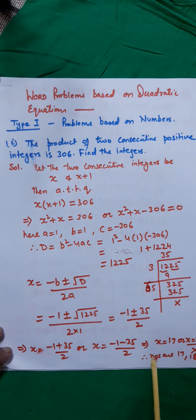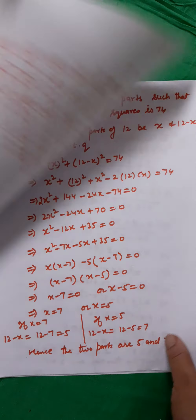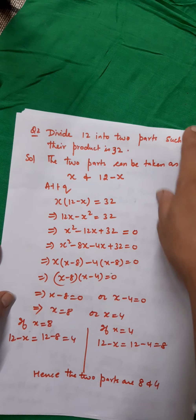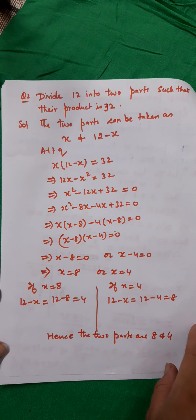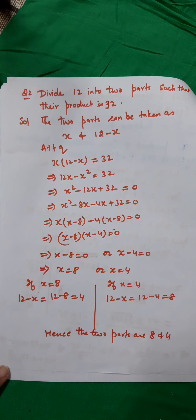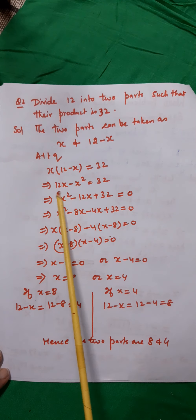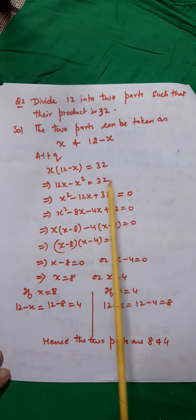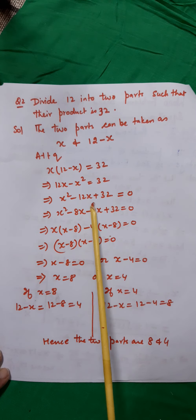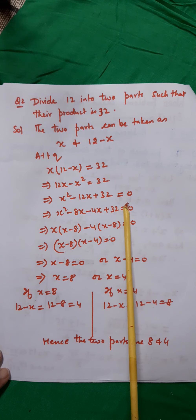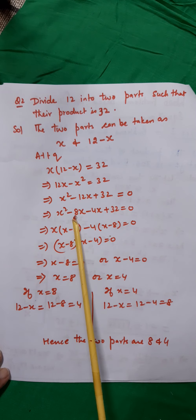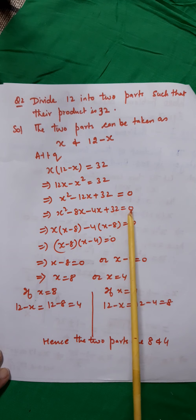Next question: Divide 12 into two parts such that their product is 32. The two parts can be taken as x and 12−x. According to the question, x(12−x) = 32, which implies 12x − x² = 32, which implies x² − 12x + 32 = 0.